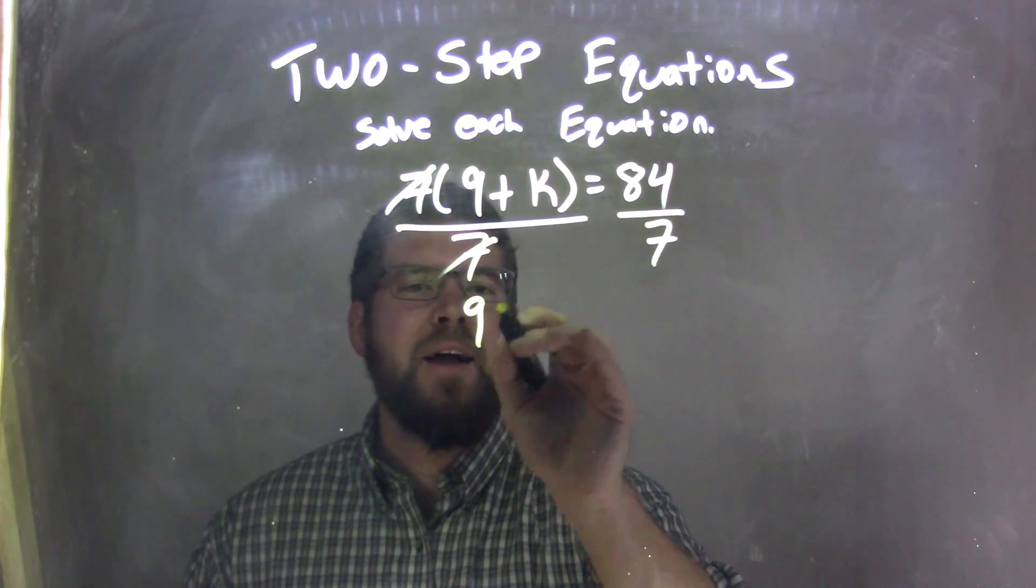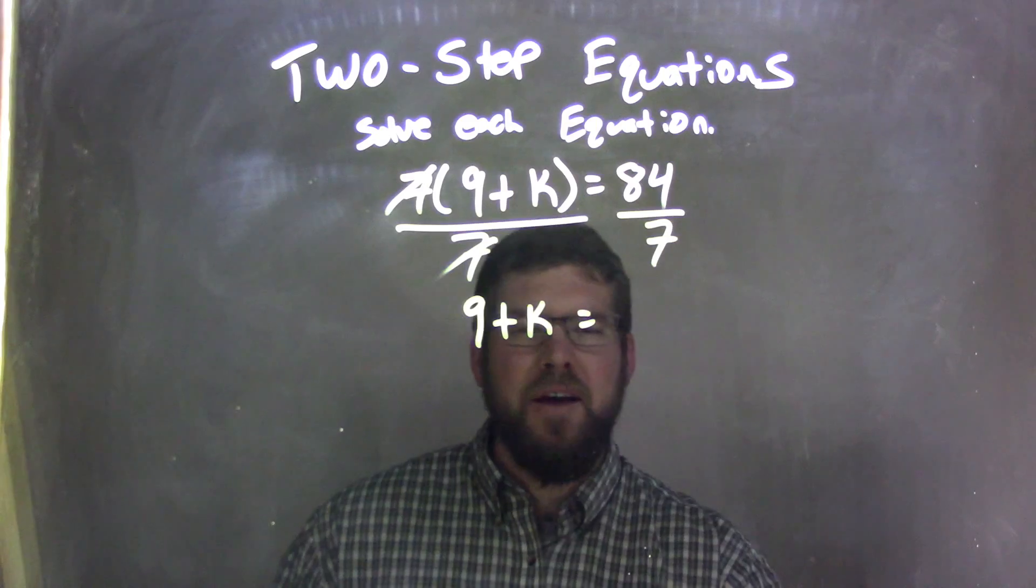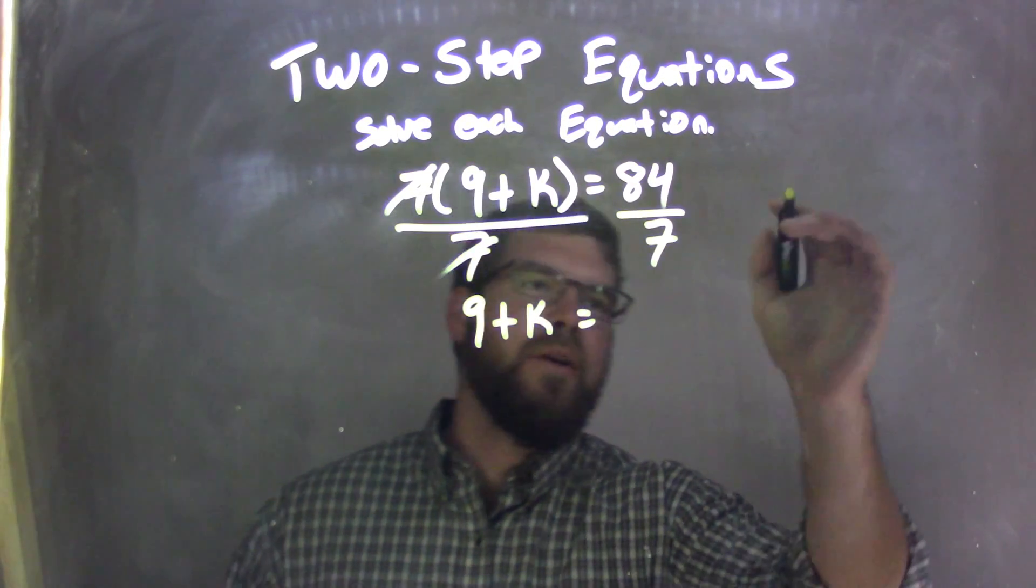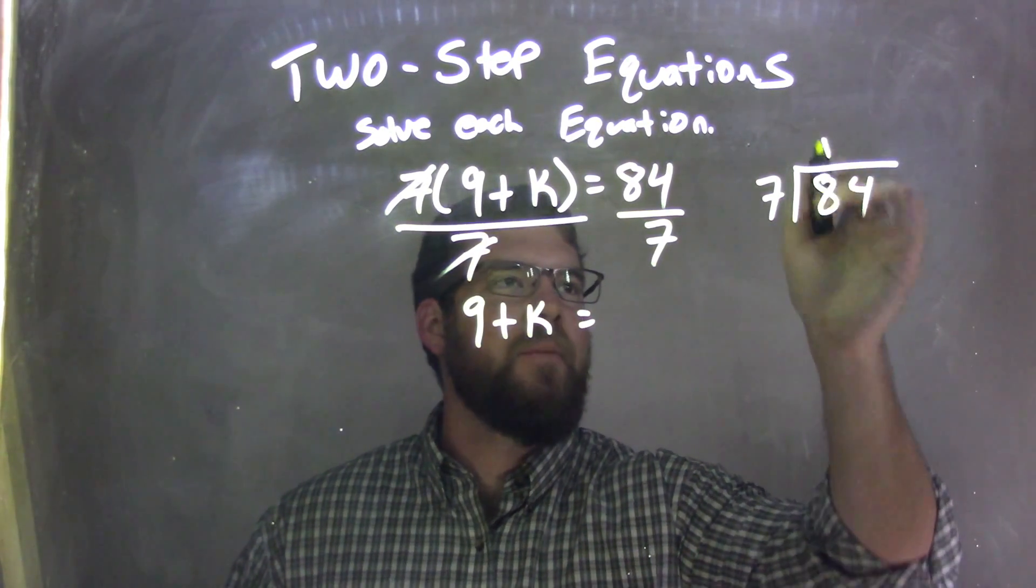So I'm left with 9 plus k here. But what's 84 divided by 7? Well, if you're really going to think about it, it's 12, but if you can't, no worries. We use long division here. 7 goes into 84, 7 goes into 8 one time.